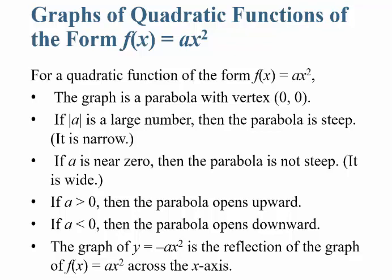Just so we're clear: the graph of y equals negative a times x squared is the reflection of the graph of f of x equals a times x squared across the x-axis — they're mirror images of each other.